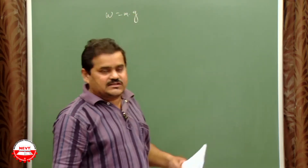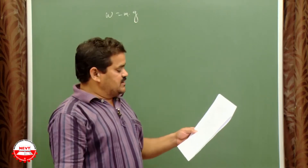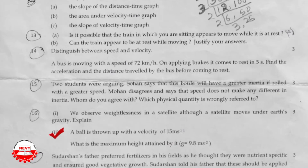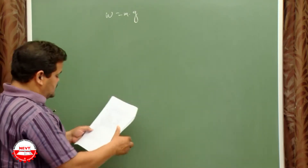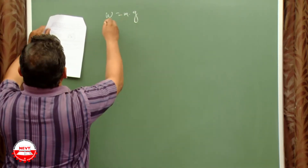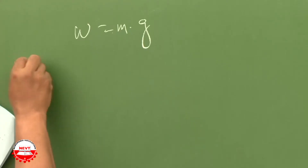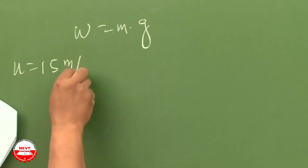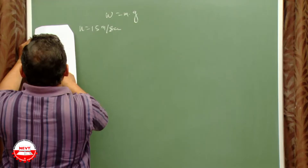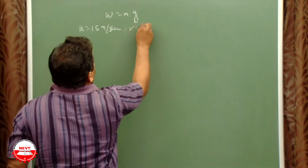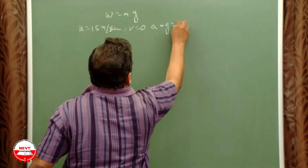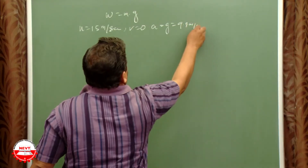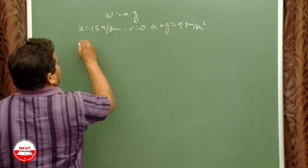Second question: a ball is thrown up with a velocity of 15 m/s — what is the maximum height attained? Ball thrown with speed u = 15 m/s; at maximum height v = 0, and a = g = 9.8 m/s². We need to find s.